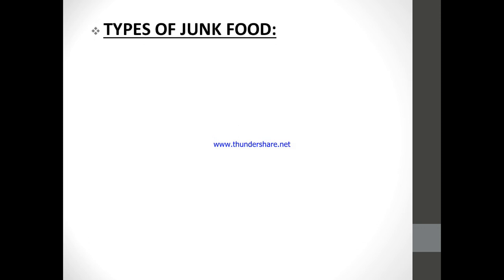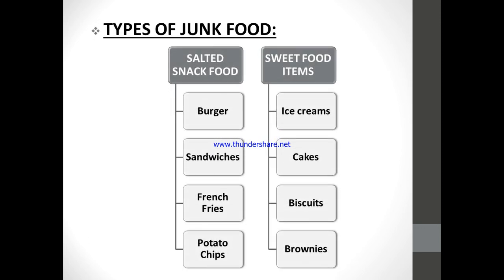The types of junk food we take fall into two categories: salted and sweet. In the salted category, items like burgers, sandwiches, french fries, and potato chips are included, along with other salty snacks. In the sweet category, items like ice cream, cake, biscuits, brownies, candies, and cola drinks are included. Any food item in which too much sugar is present falls into this sweet food category.